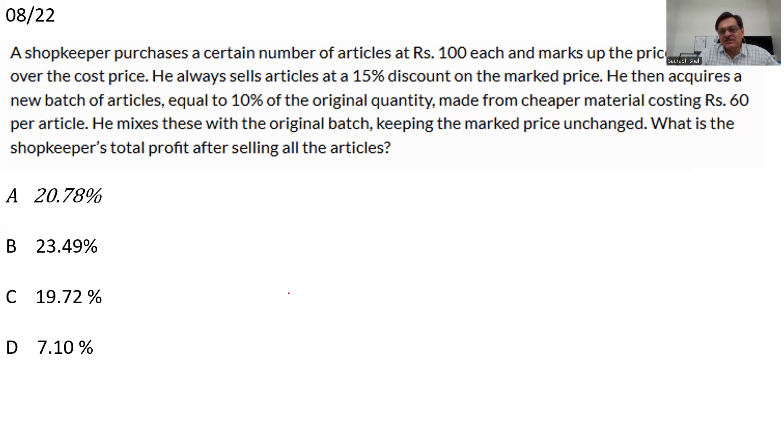A shopkeeper purchases a certain number of articles at 100 each. 100 is a very good thing here and marks up by 40%. He sells away the articles at a 15% discount. Good enough. He then acquires a new batch of articles equal to 10% of the original quantity. This is where we get our hint. Let that initial, because ultimately we want percentage. Let that initial number that is mentioned, the certain number, let this number be just 10 articles. The shopkeeper has purchased 10 articles for 100 rupees each. So his cost is 1000 rupees here.